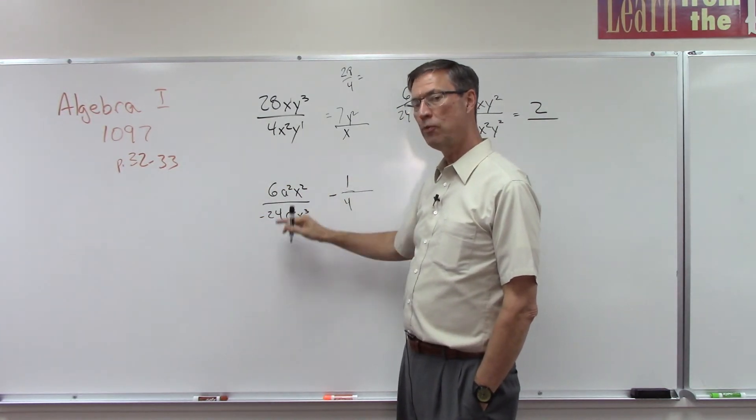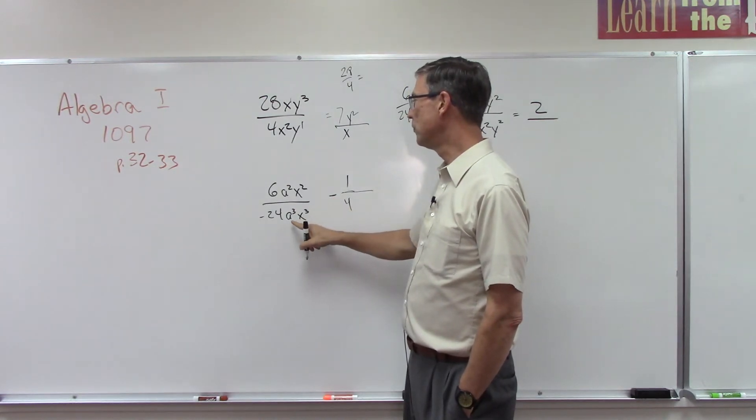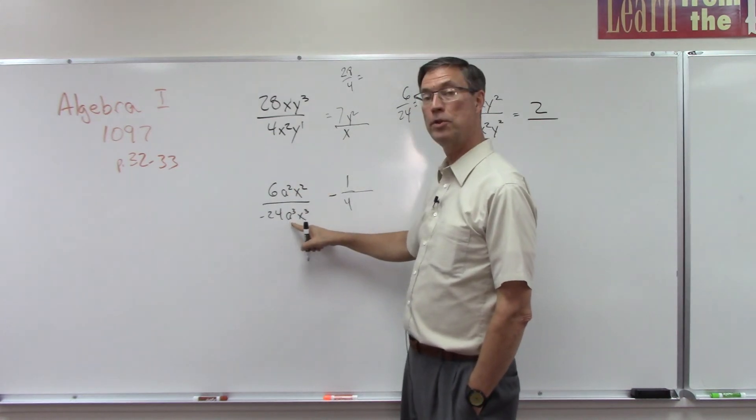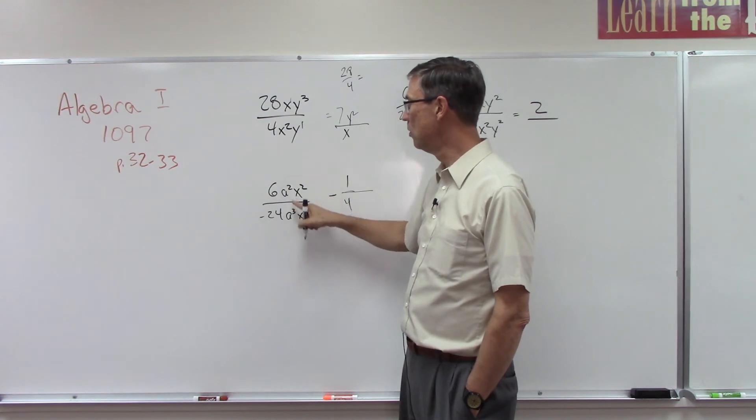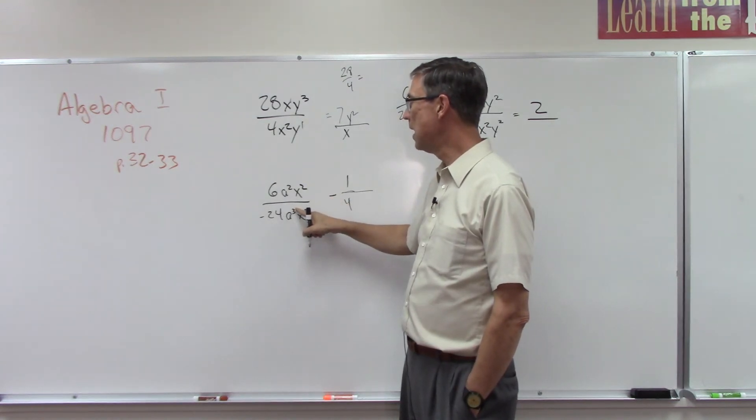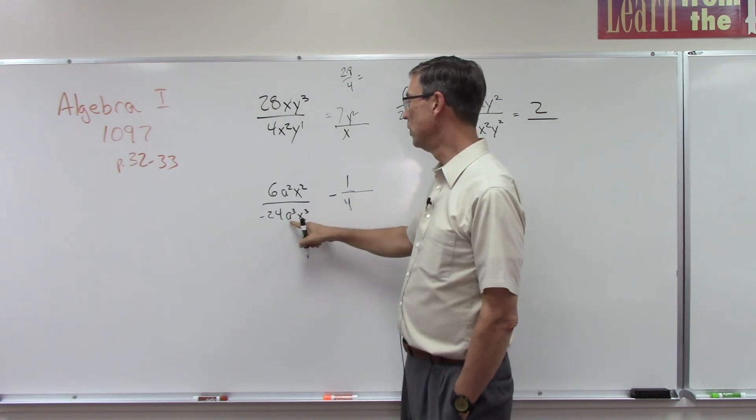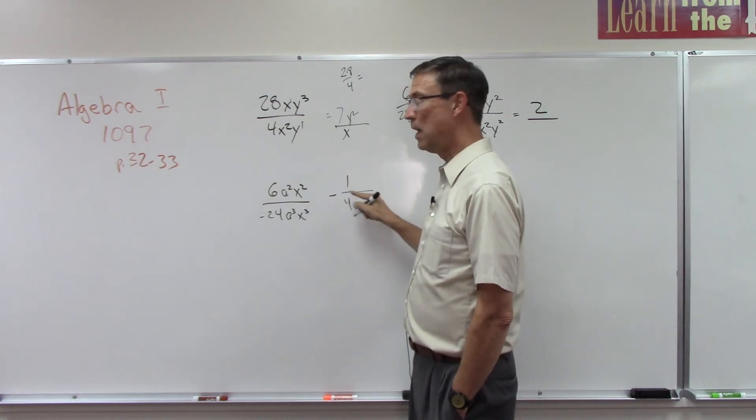If the signs are different, the answer is negative. Now let's think about where should these letters go. I have a squared on the top, a to the third on the bottom. So again, the rule is subtract the smaller from the larger and then keep that letter on the side where the larger one was. So 3 minus 2 is 1, so I'm going to put the a down here and keep the exponent of 1.